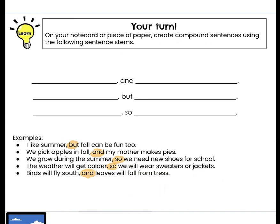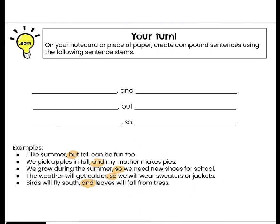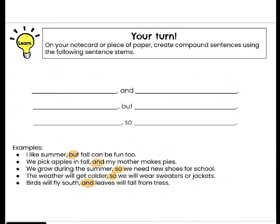It is your turn to write three sentences of your own. These are going to be longer sentences — compound sentences — because we should have a complete sentence on the left side of our conjunction and a complete sentence on the right side. We put them together with a conjunction to make one longer sentence. Pause the video here to write your own sentences on your note card or piece of paper. When you're done, you can unpause.